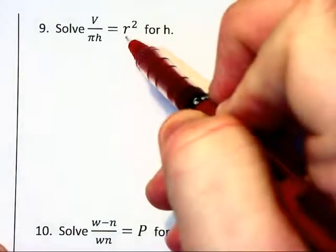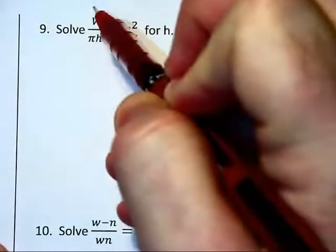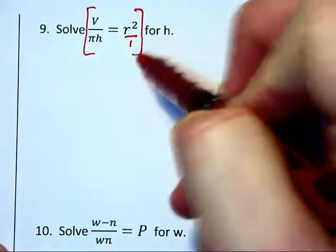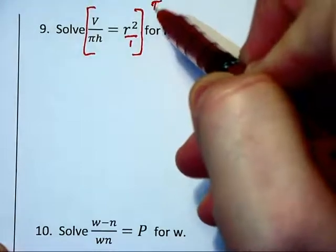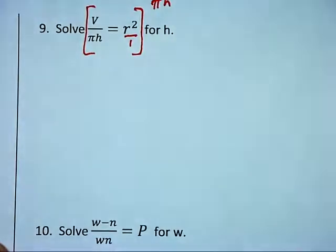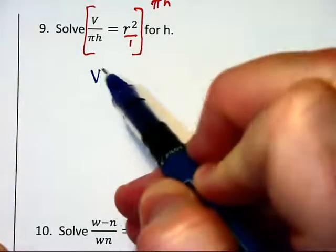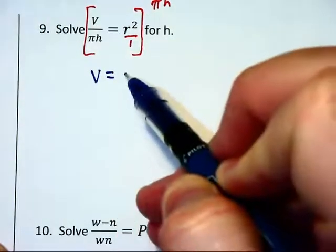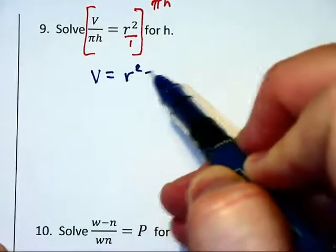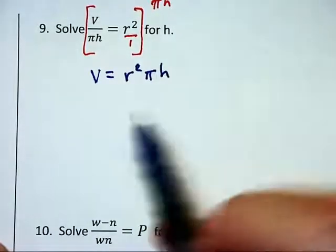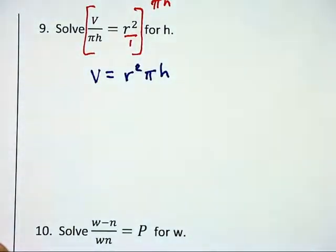On this next problem, I'm going to put the r squared over 1 and then I'm going to multiply through on each side by pi times h to clear the fractions. On the left, the fractions just disappear and we have capital V and on the right we have r squared pi h and you can rewrite those in any letter form you want.